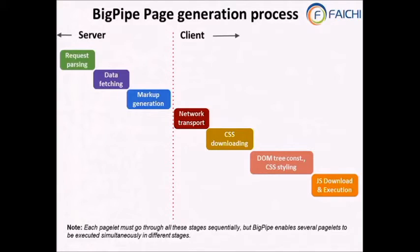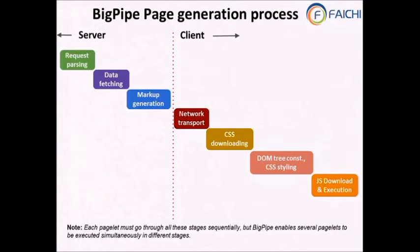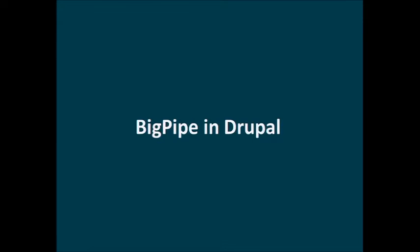On the server side you have request parsing, data fetching, and markup generation. On the client side you have network transport, CSS downloading, DOM pre-construction, CSS styling, JS download and execution. From the BigPipe perspective, each pagelet must go through all these stages sequentially, but all pagelets work simultaneously. So every pagelet has all these stages to complete, but they all run in parallel — giving the browser a very good experience.